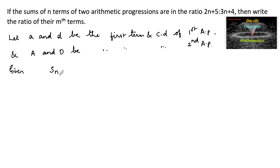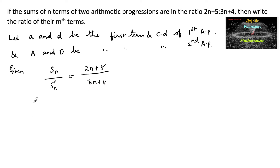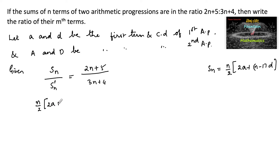Let Sn be the sum of first n terms of the first AP, and Sn' be the sum of first n terms of the second AP. The ratio is given as 2n plus 5 upon 3n plus 4. The sum of n terms in arithmetic progression is n by 2 into 2a plus n minus 1 into d. Using this formula, let us write n by 2 into 2a plus n minus 1 into small d.